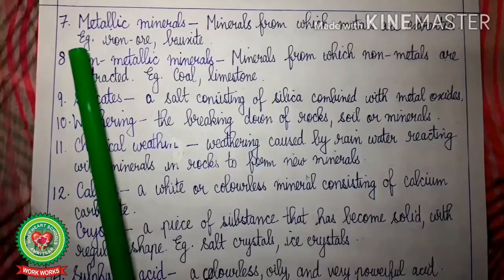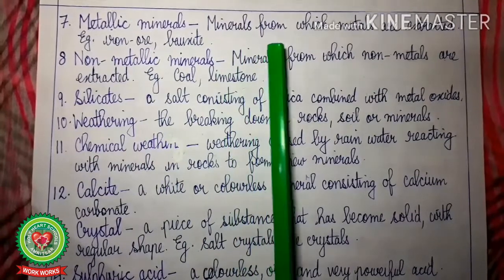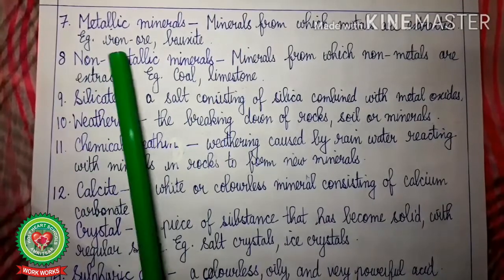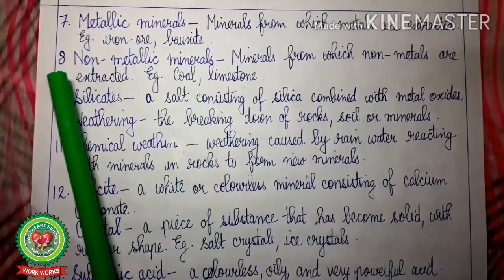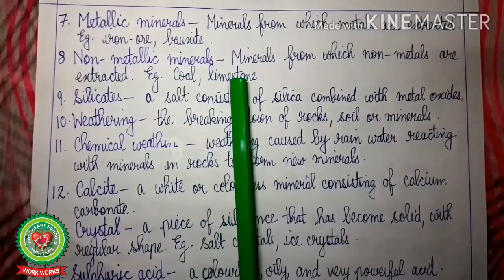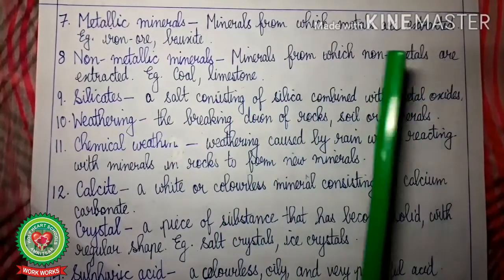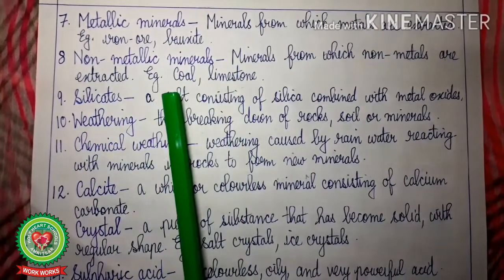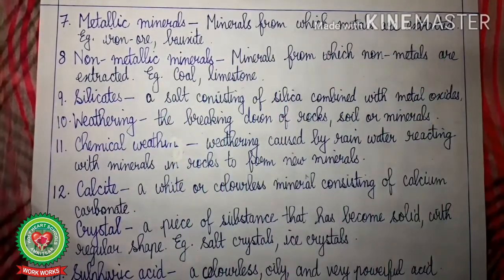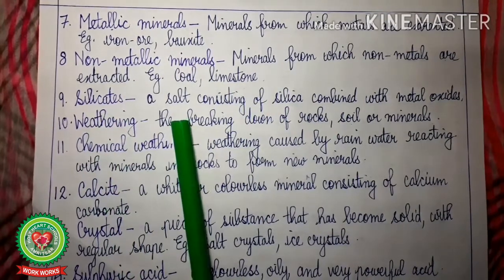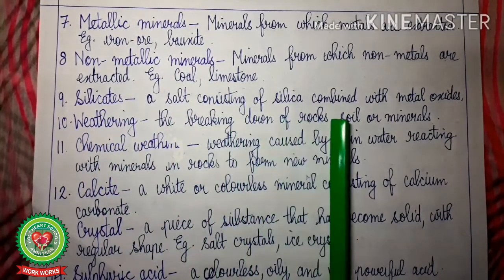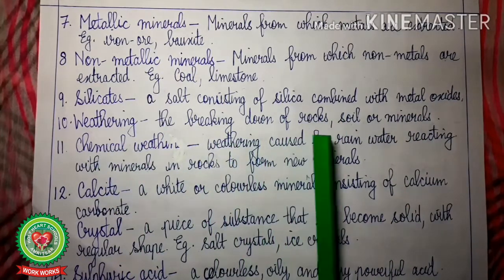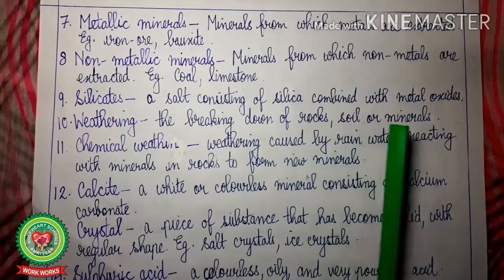7. Metallic Minerals — the minerals from which metals are extracted are called metallic minerals. Examples: Iron ore, Bauxite. 8. Non-metallic Minerals — minerals from which non-metals are extracted on a large scale are called non-metallic minerals. Examples: Coal, Limestone, Petroleum. Silicates — a salt consisting of silica combined with metal oxides. Weathering — the breaking down of rocks, soil or minerals is called weathering.